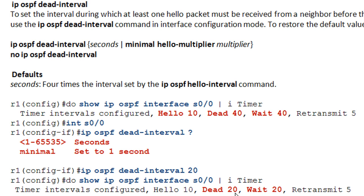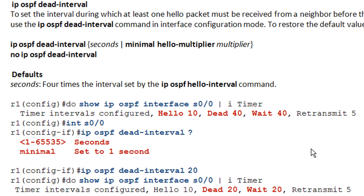One thing to consider is that changing the dead interval will affect your wait timer. Generally that's not a big deal — it usually won't take 20 seconds for designated router election. But keep that in mind. On the CCIE lab, if a question asks you to set the OSPF wait timer to say 18 seconds and you can't find an ip ospf wait-interval command, realize that the wait interval is provided by the router dead interval. Just set the dead interval to 18 seconds.